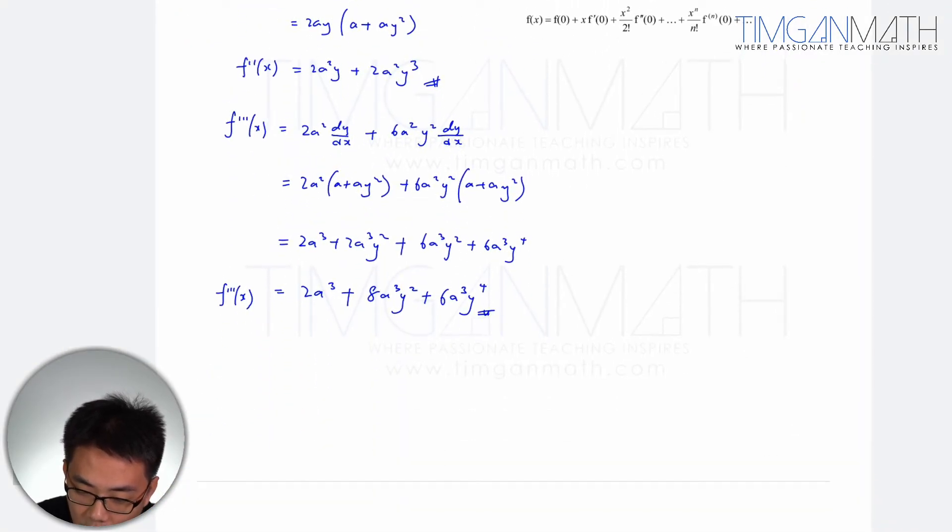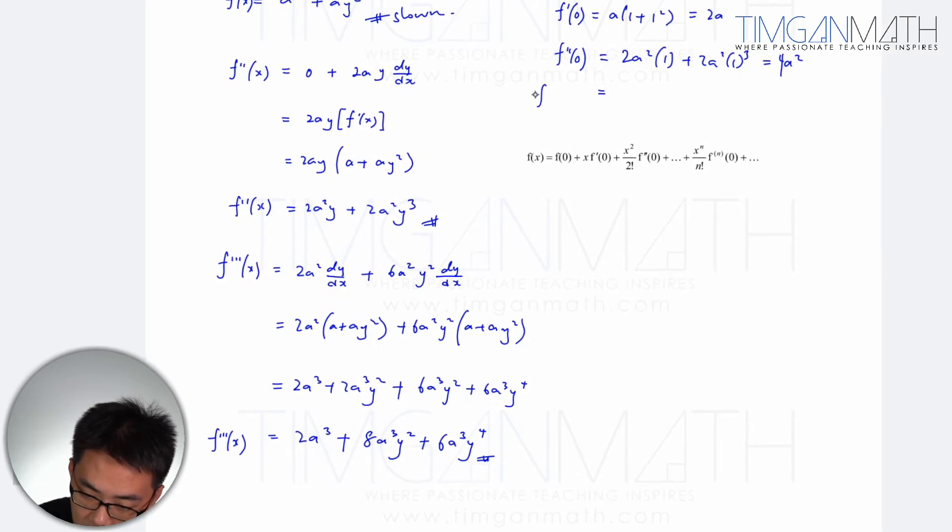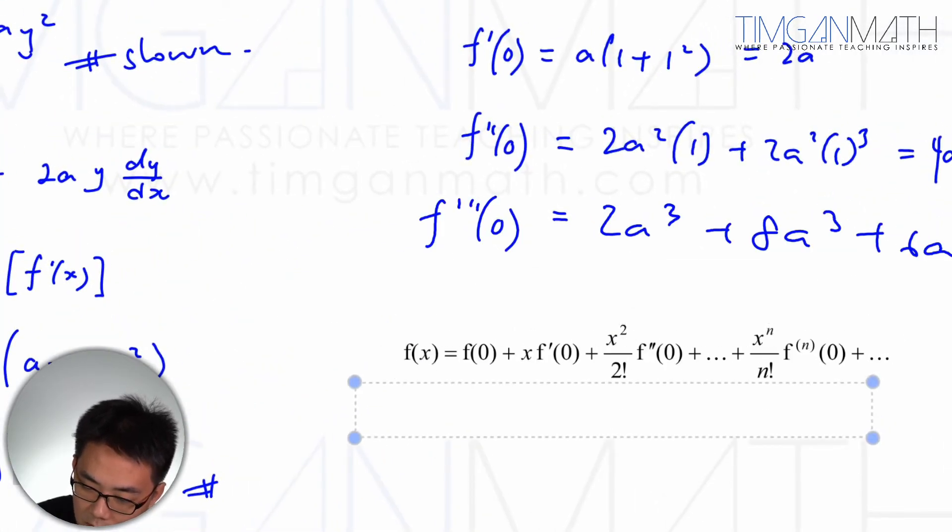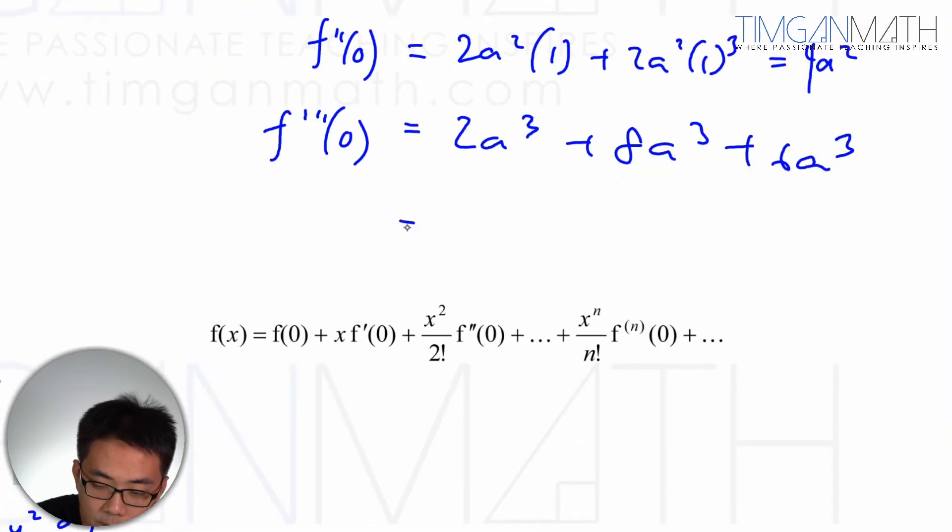Then after, f'''(0) will just be 2a³ + 8a³ + 6a³ times 1. All the y's are 1. When x is 0, y is 1. So this will give us 16a³.